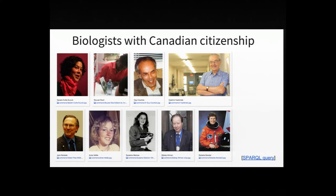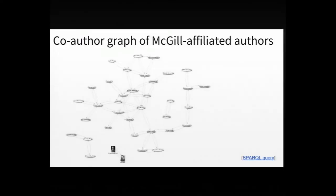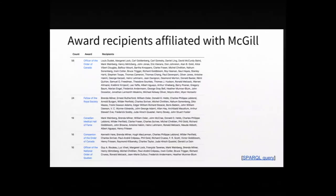In Canada, we have a few examples of things that Wikidata knows about. We have biologists with Canadian citizenship. For individual institutions, we are building co-author graphs — this is an example for authors affiliated with McGill. And this is an example of awards: Wikidata contributors are really dedicated about awards, trying to complete as much as possible the record of all known awards especially for notable scientists. You can find here records of all awards to scientists affiliated with McGill.